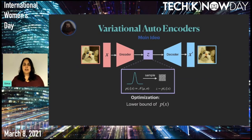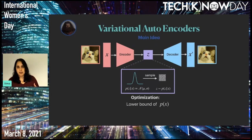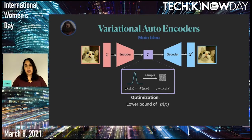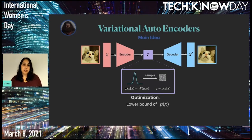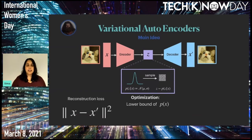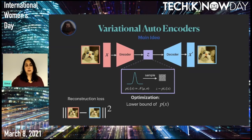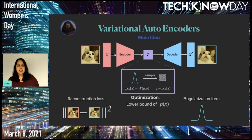We optimize this with a lower bound on the probability of X. We said that we don't really know how to optimize for P of X, but this lower bound allows us to write it as two terms that we can compute. The first is a reconstruction term — we want our decoded image to be as close as possible to our input image, just like with other autoencoders. The second term is a regularization term: we want our latent space to be normally distributed, meaning having a mean of zero and a standard deviation of one.